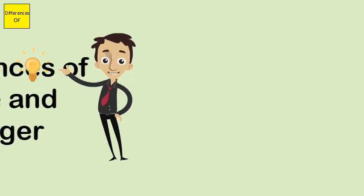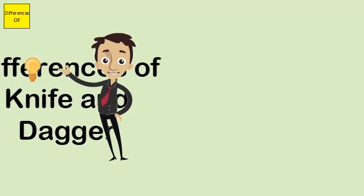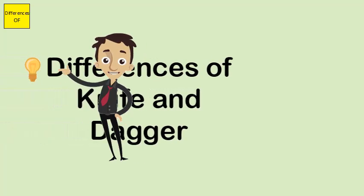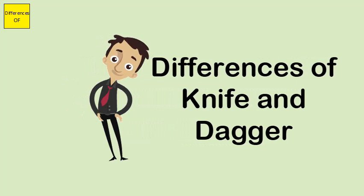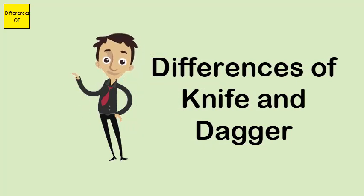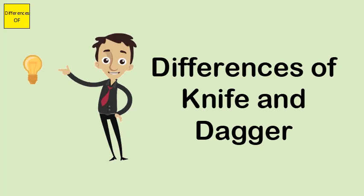Difference Between Knife and Dagger. A knife is a cutting tool that usually has a blade and handle. A dagger is described as a double-edged blade.